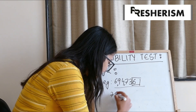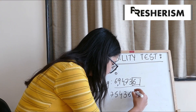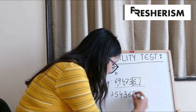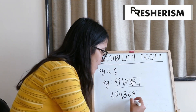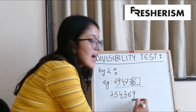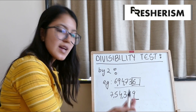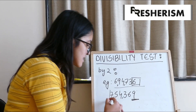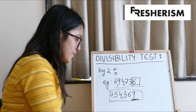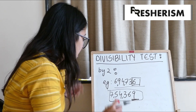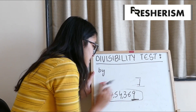Let us take another example: 754,369. Here, 9 is at the units place, which is not an even number. Hence, this number won't be completely divided by 2.